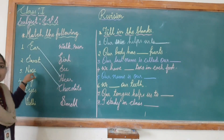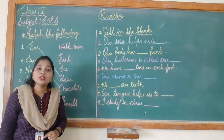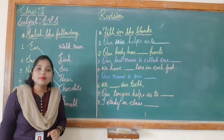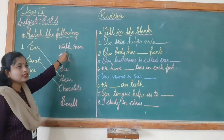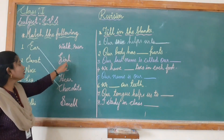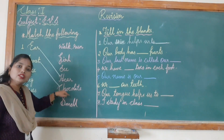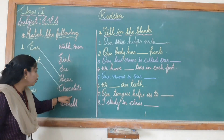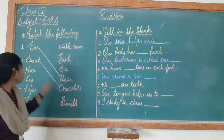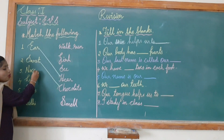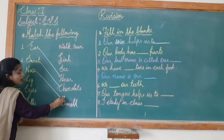Next, nose. Nose means what, children? Our nose helps us to smell. Looking at what's left — hear and chocolate are already matched — so the remaining option is smell. I will join nose to smell.